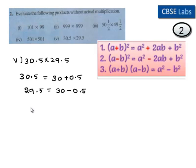Here we have to find the product of 30.5 times 29.5, which is equal to 30 plus 0.5 times 30 minus 0.5. It is in the form of a plus b times a minus b.